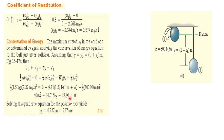Simplifying and combining all terms, we get a quadratic equation in s3. Solving the quadratic equation gives us the value of s3 — the elongation of the cord after the ball rebounds from the ceiling.